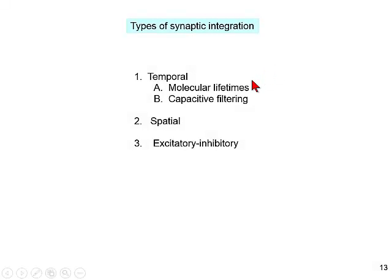We have a general view of the synapses in the nervous system — what they look like, where they are. Now we talk about integration of signals by synapses. The typical CNS neuron has about 1,000 synapses. In most cases, the output of a neuron is a firing pattern, so the neuron integrates all of those inputs and either fires a spike or a train of spikes or does not.